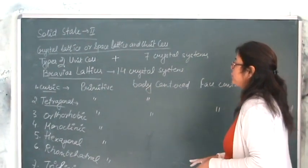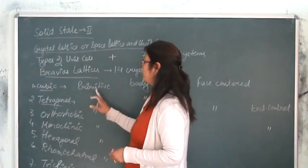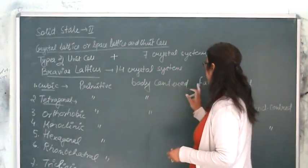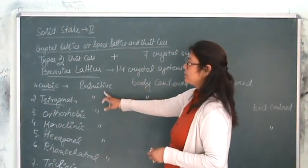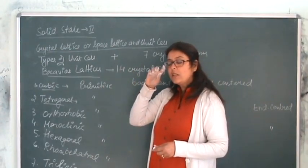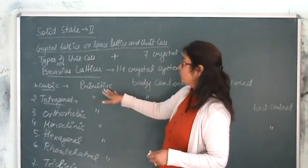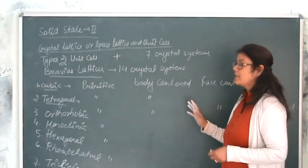So you can see over here that when we are talking of cubic, cubic has 3 types of arrangements. One is primitive in which all the constituent particles are present only at the corners; one is body centered,